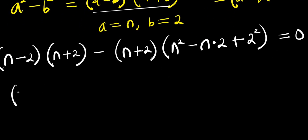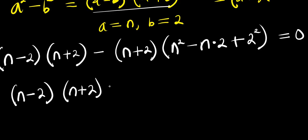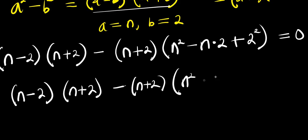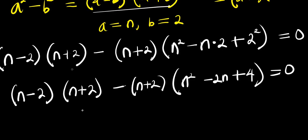So from here, we have (n - 2)(n + 2) minus (n + 2)(n² - 2n + 4) = 0. There is (n + 2) and (n + 2) — I can factor that out.